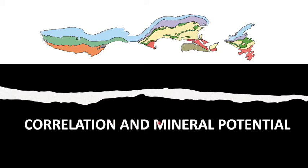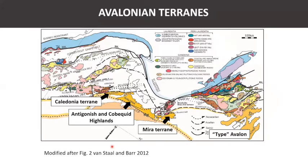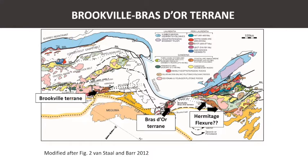Moving on to correlations and mineral potential: diagrams from Van Staal and Bar 2012 show the type area of Avalon correlating with the Caledonia terrain, rocks in the Antigonish and Cobequid Highlands in mainland Nova Scotia. Very firm correlations have been made between the Brookville terrain and the Bras d'Or terrain in Cape Breton Island, containing similar sequences. The New River terrain has uncertain correlations, with possible Neoproterozoic correlatives in the Aspy terrain and in the Hermitage Flexure. The St. Croix and Annadale terrains are essentially part of the Penobscot Arc rocks and Gander sedimentary rocks throughout the northern Appalachians.